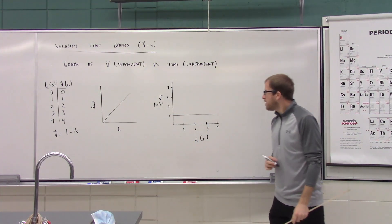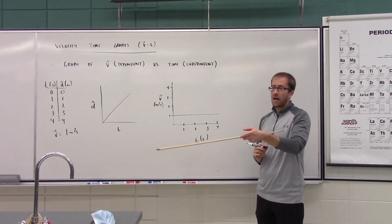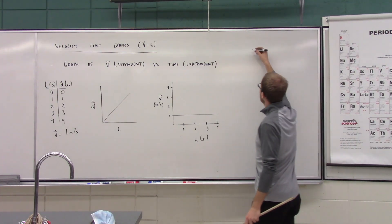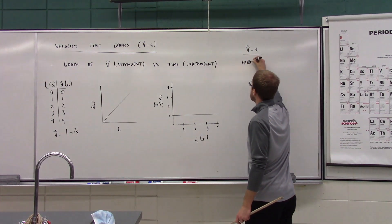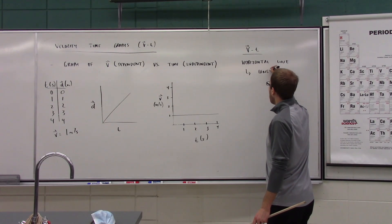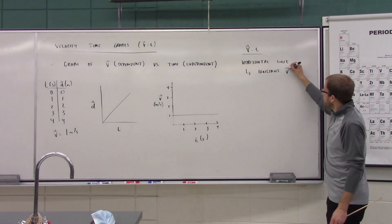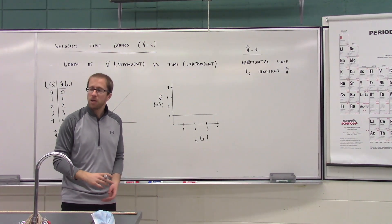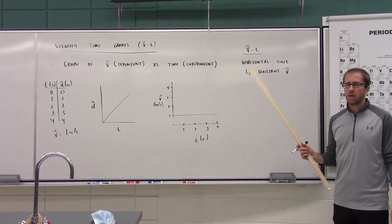On a position-time graph a horizontal line means at rest, but on a velocity-time graph it represents constant velocity. So let's note: a horizontal line on a velocity-time graph means constant velocity.